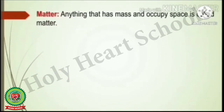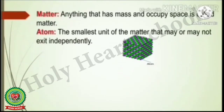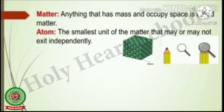Students, you have done in your previous classes that matter is anything that has mass and occupies space. For example, a book, a tree, a bird, a person — anything that has mass and occupies space is called matter. Everything is made up of tiny particles called atoms, or we can say that atoms are the building blocks of matter. For example, if we observe the lead of a pencil under a microscope, we will see it is made up of atoms — carbon atoms.